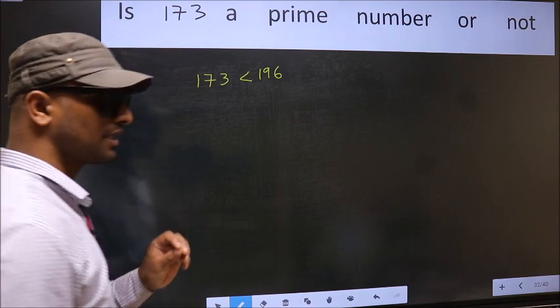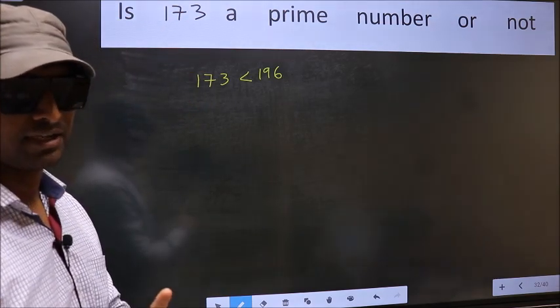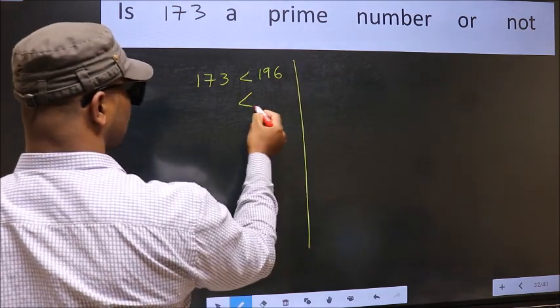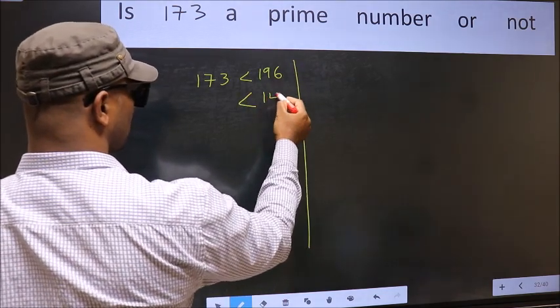This is your step 1. Next, 196 is nothing but 14 square.